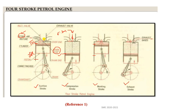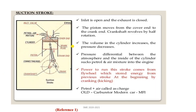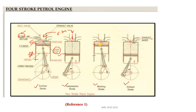The key difference between petrol and diesel engines is that petrol engines have a spark plug while diesel engines have a fuel injector. In petrol engines, air plus petrol enters during suction; in diesel engines only air is inducted and diesel is injected at the end of the compression stroke for self-ignition.